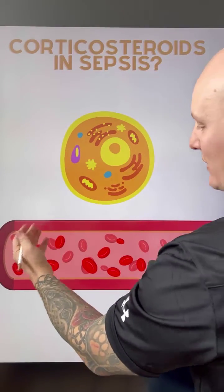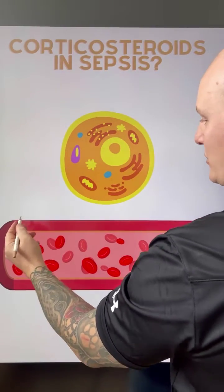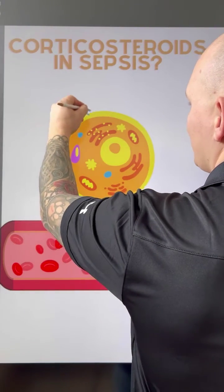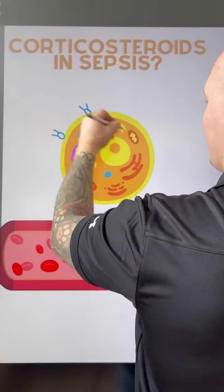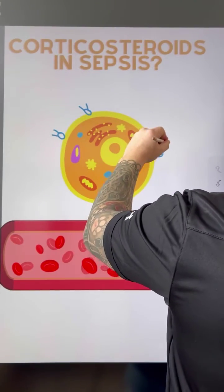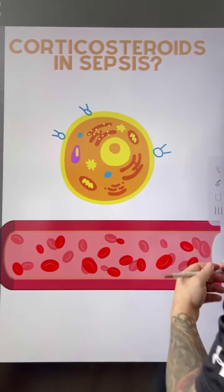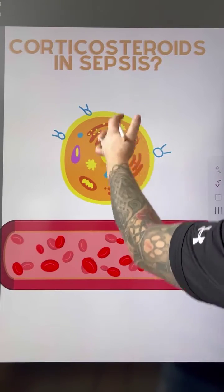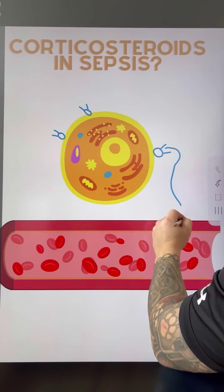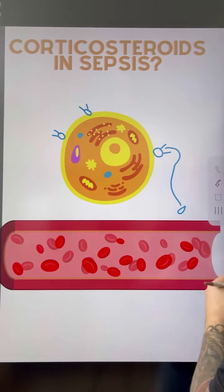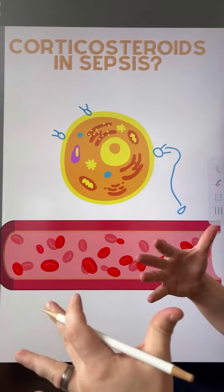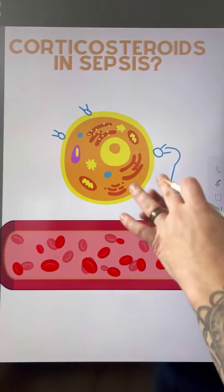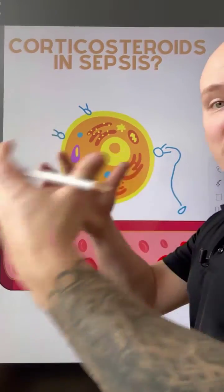Very simply put, when it comes to the physiology — remember when we have bacteria that attaches itself to cells like so, it's going to release endotoxins or exotoxins. And these toxins are going to essentially reach the immune cells, the mast cells on the vessels, and those mast cells are going to create an immune response.